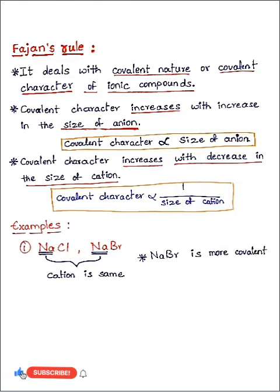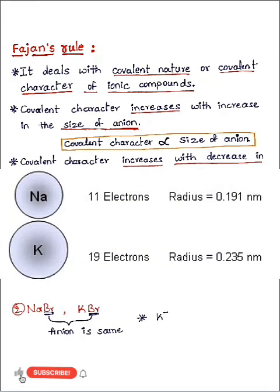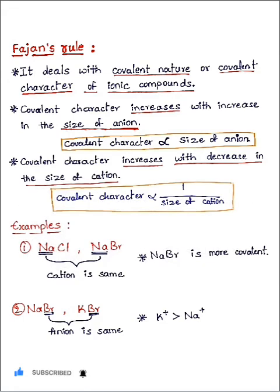Let's take one more example: sodium bromide and potassium bromide. In these two compounds, the anion is common, so the covalent nature will depend upon the cation. Potassium ion is larger than sodium ion. As per Fajan's rule, the compound which contains the smaller cation would be more covalent in nature. So here, sodium bromide would be more covalent in nature.